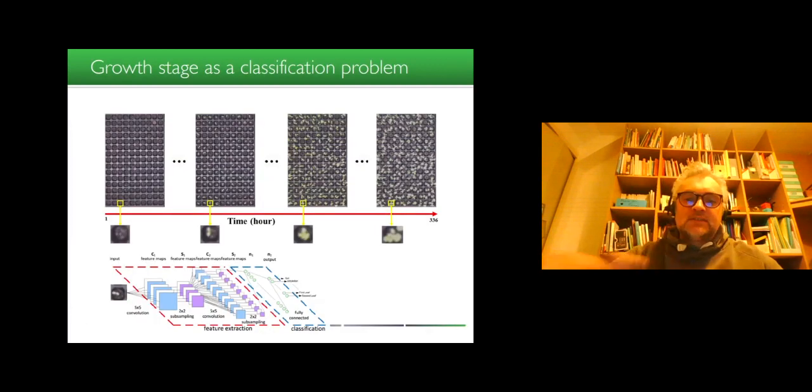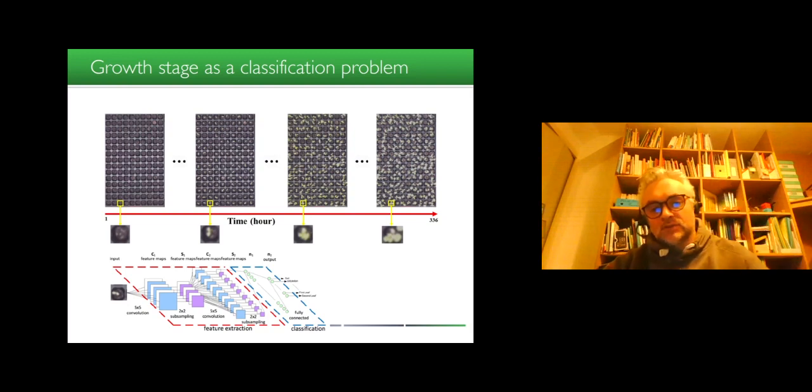So we have time sequences of images of this kind. And for each pot, we can see first the soil, then appearance of the cotyledon, then appearance of the first leaf, and so on. And so we design deep learning architecture. And this growth stage evolution can be seen. We model it as a classification problem, meaning that we give an image from the sequence of a single pot, and we classify it as one of the class soil, cotyledon, first leaf, second leaf, and so on.